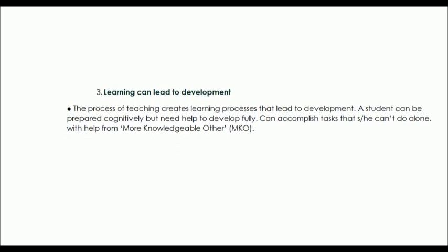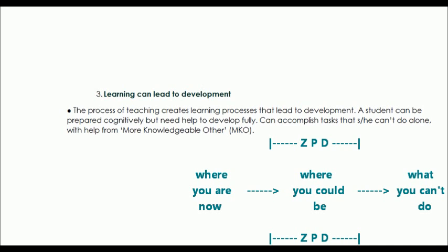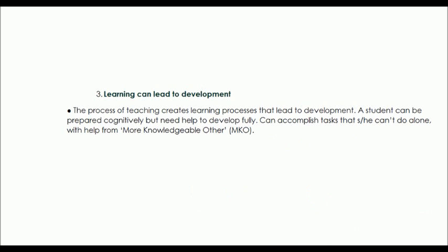The third principle is that learning leads to development. Unlike Piaget, where development leads to learning, with Vygotsky it's learning that leads to development — the process of teaching creates learning processes that lead to development. A student can be prepared to learn but need help to get from where they are to where they have learned something. What comes into play here is the zone of proximal development: the difference between a person's actual developmental level and a higher level they can reach under guidance or with collaboration. The more knowledgeable other helps the developing person get from where they are to where they can be with help.